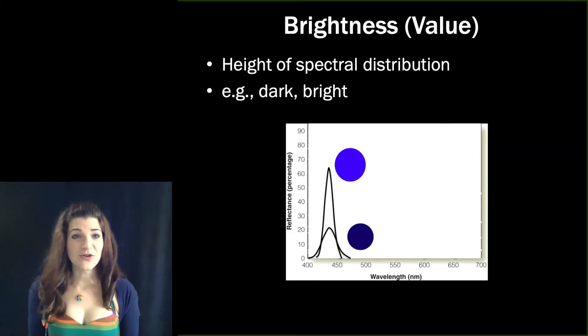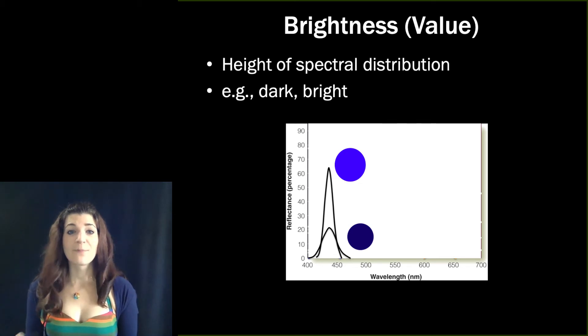Finally, colors also differ in terms of their brightness, which is also sometimes called value. And brightness is the perceived intensity of a light.